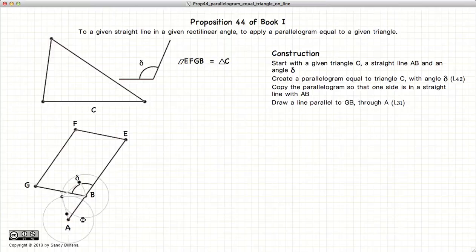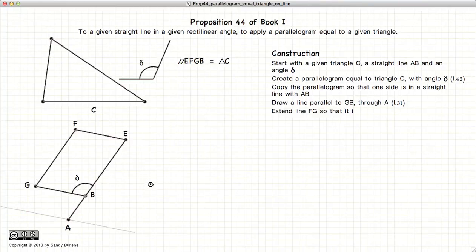So now we're going to draw a parallel line of GB through point A. Extend FG to our line. Call it point H.